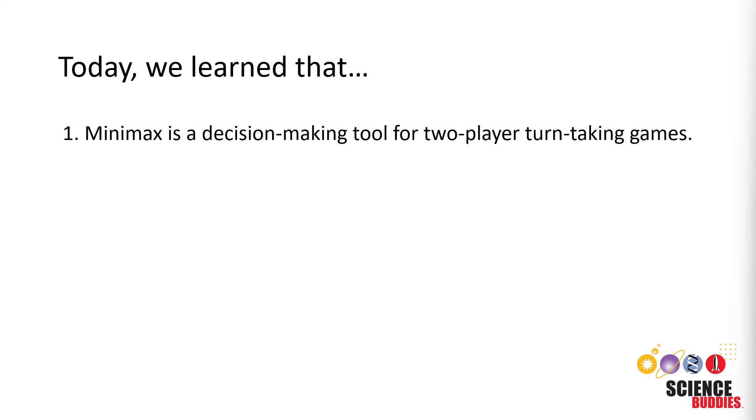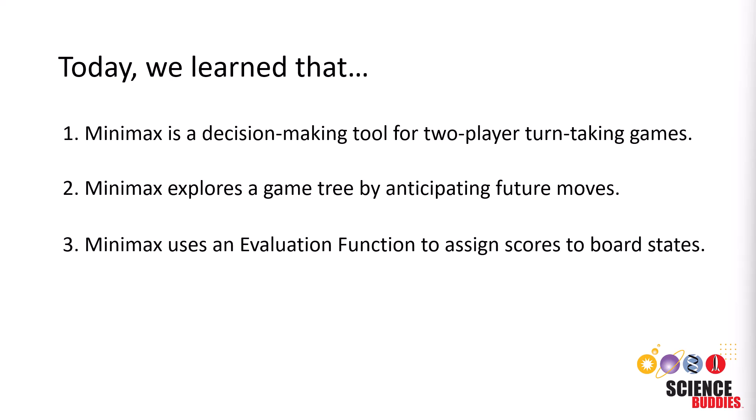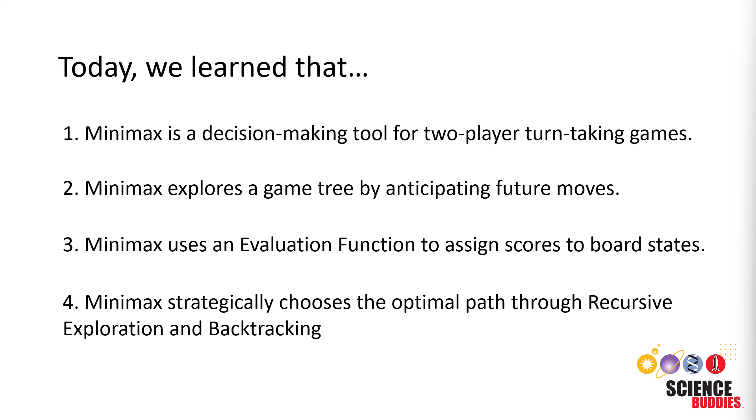And with that, we reach the end of this explanation of the Minimax algorithm. We learned that the Minimax algorithm is a decision-making tool for two-player turn-taking games. It systematically explores a game tree by anticipating future moves, and employs an evaluation function to assign scores to board states. Finally, it strategically chooses optimal paths through recursive exploration and backtracking.